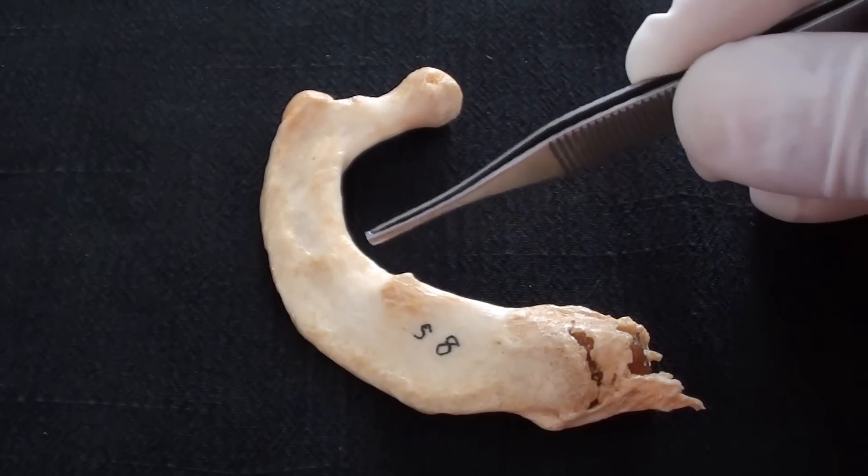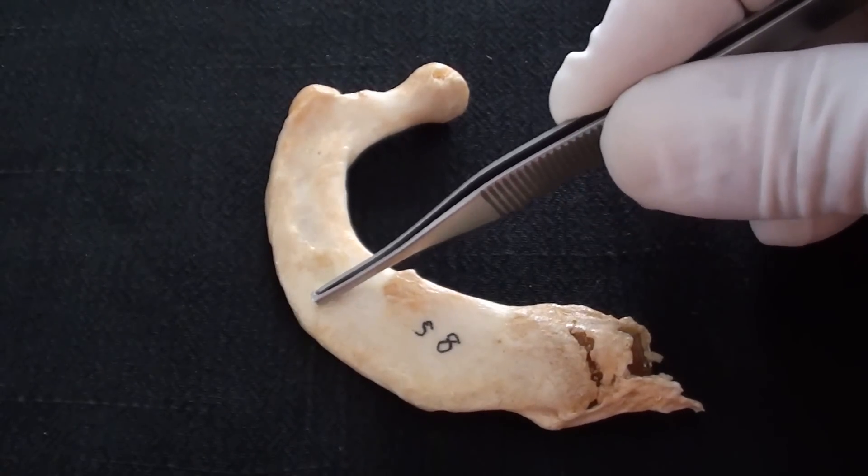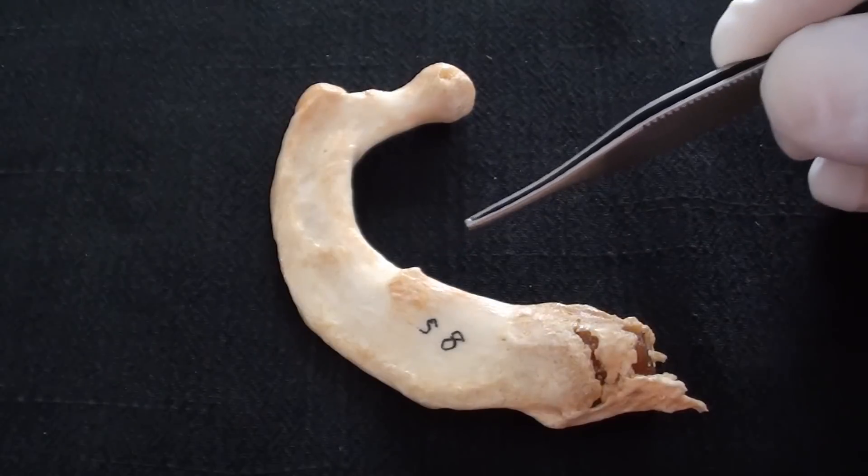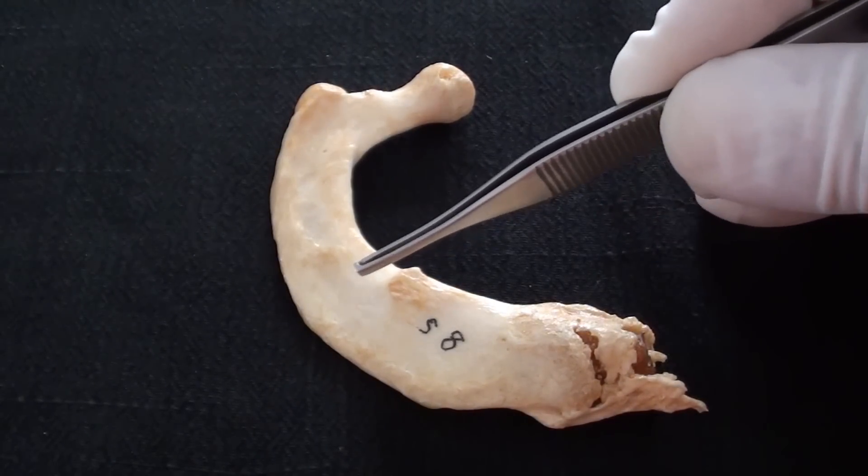Further, posterior to the tubercle comes another parallel running groove that will allow passage of subclavian artery also over the upper surface of rib number one.